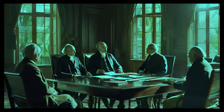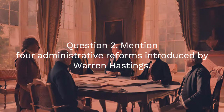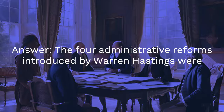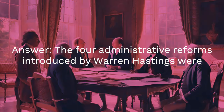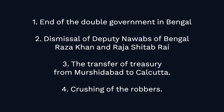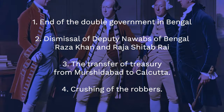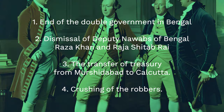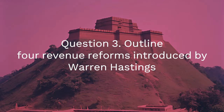Four, a complete breakdown of the judicial system. Question 2: Mention four administrative reforms introduced by Warren Hastings. Answer: The four administrative reforms introduced by Warren Hastings were: one, end of the double government in Bengal; two, dismissal of deputy Nawabs of Bengal, Raza Khan and Raja Shittab Rai.